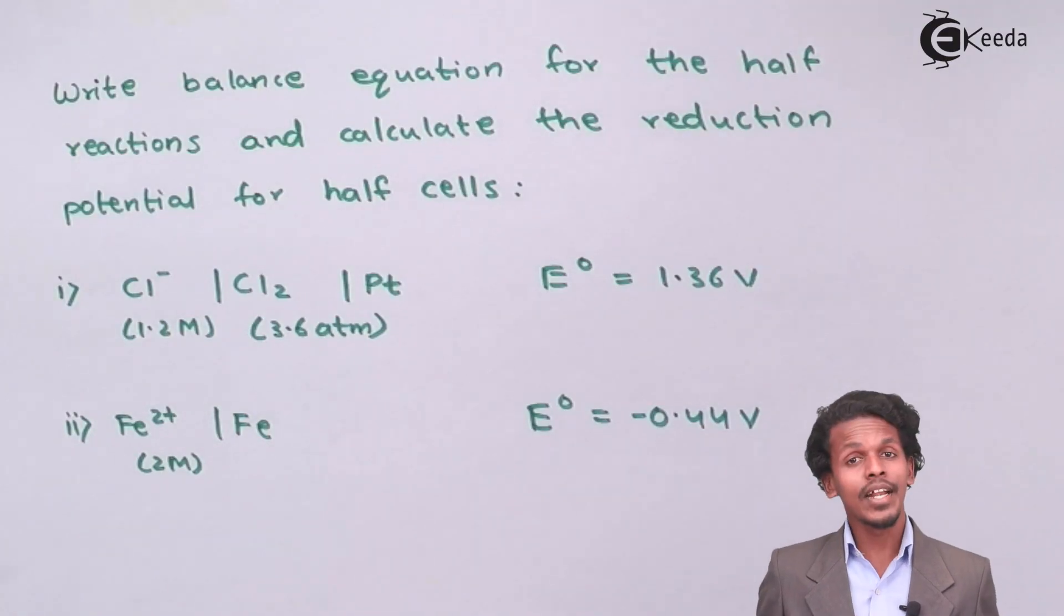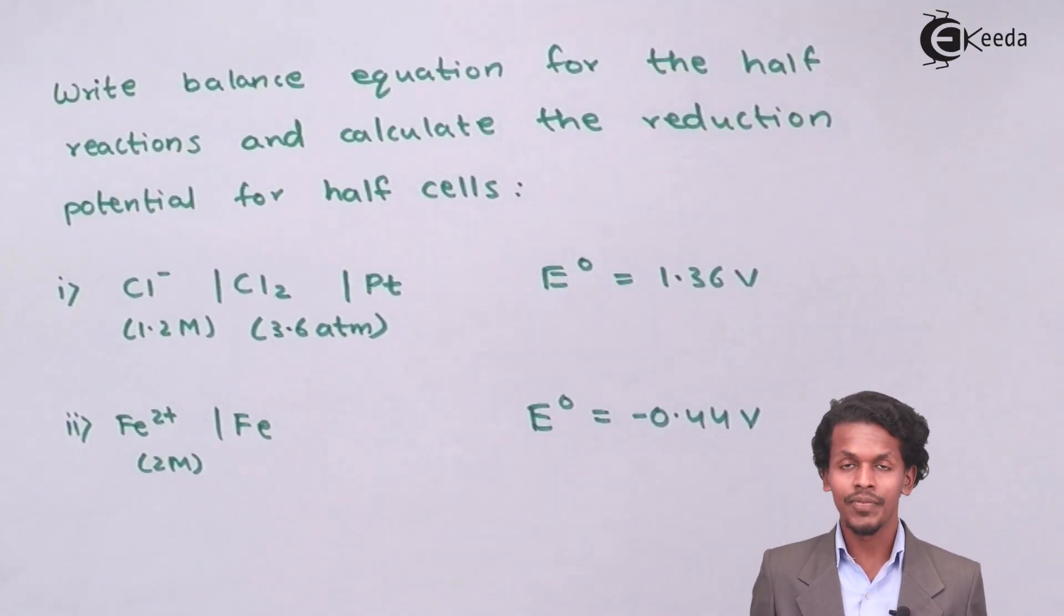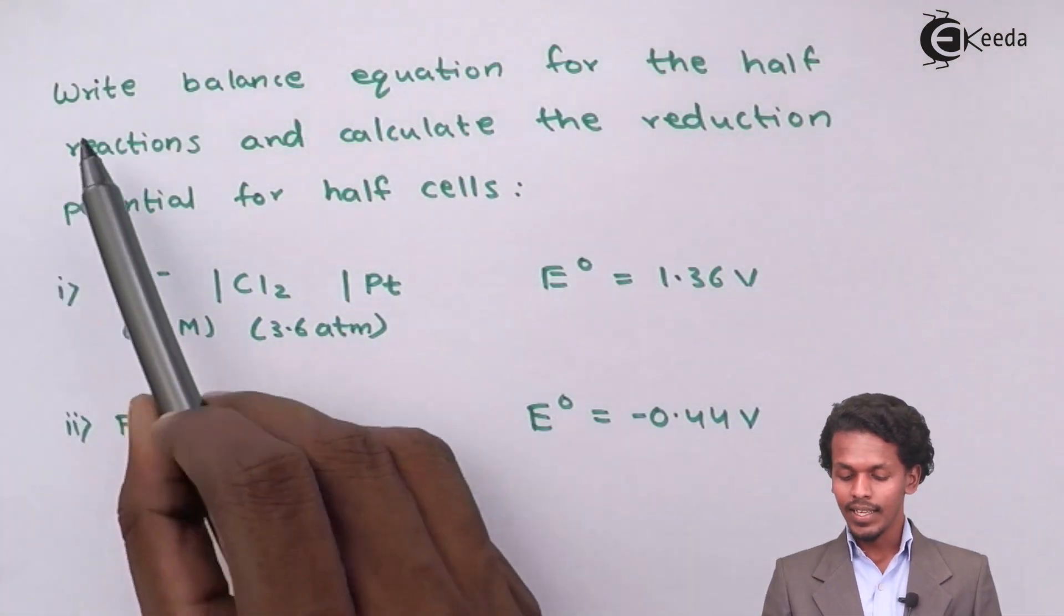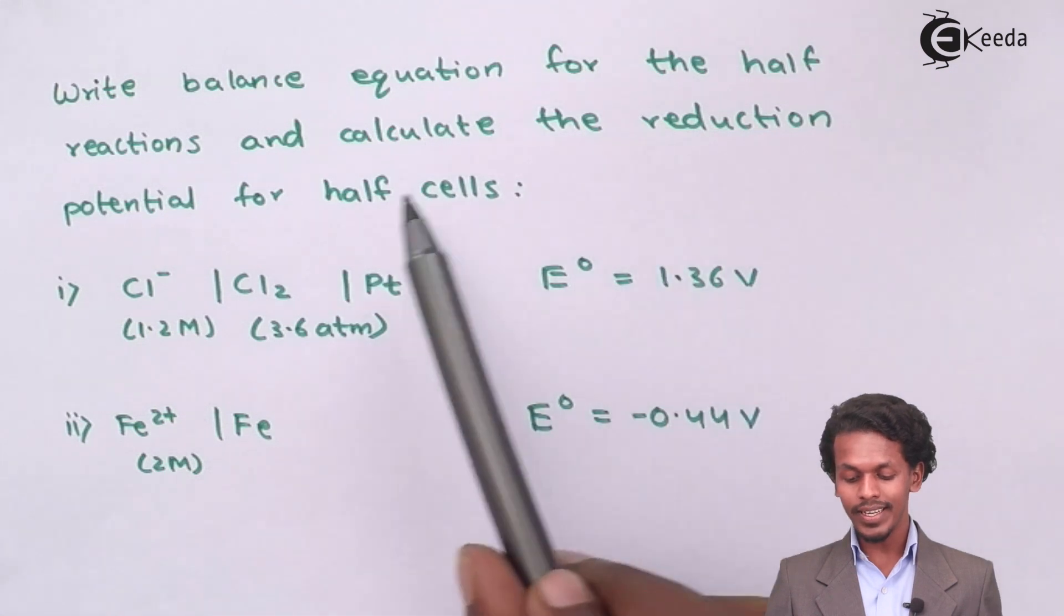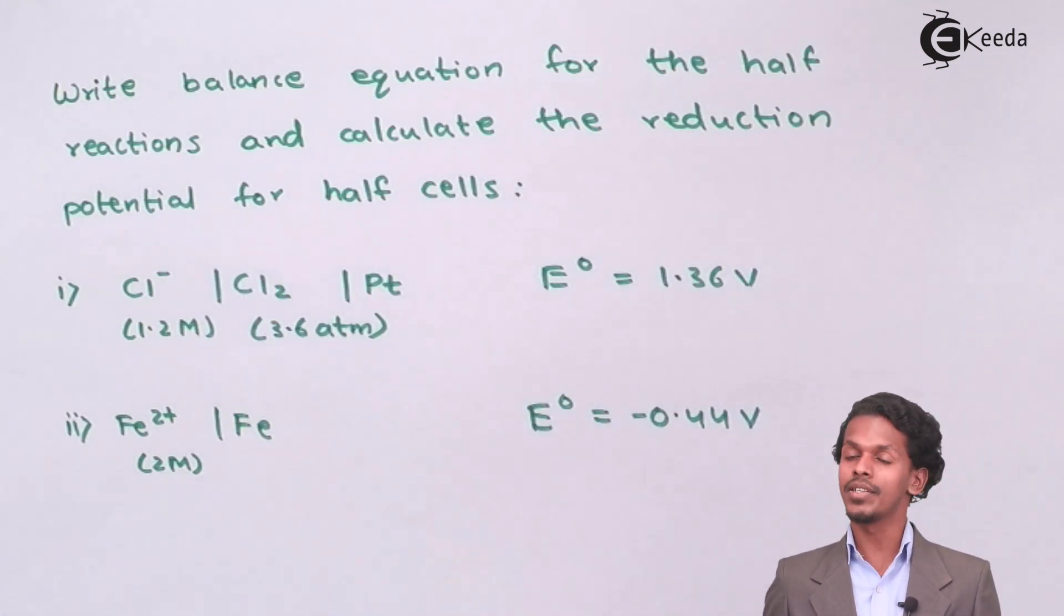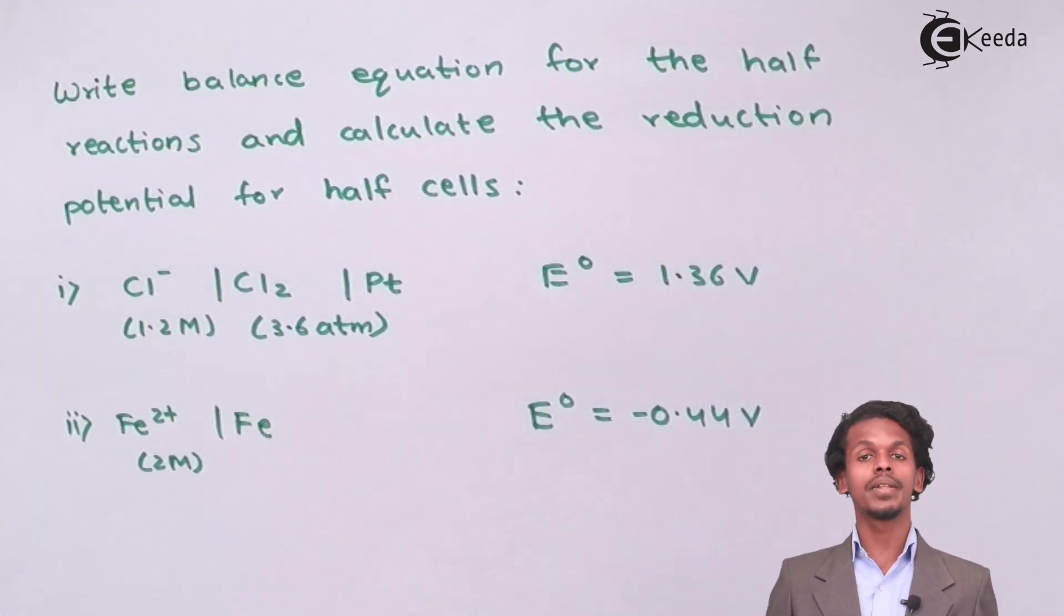This is another kind of question. It says that we have to write the balance equation for the half reaction and calculate the reduction potential for the half reactions that have been mentioned. There are two questions that have been provided to you.